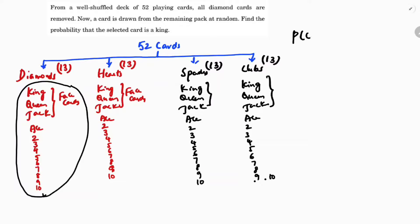So probability of an event formula is number of favorable outcomes by total number of outcomes.